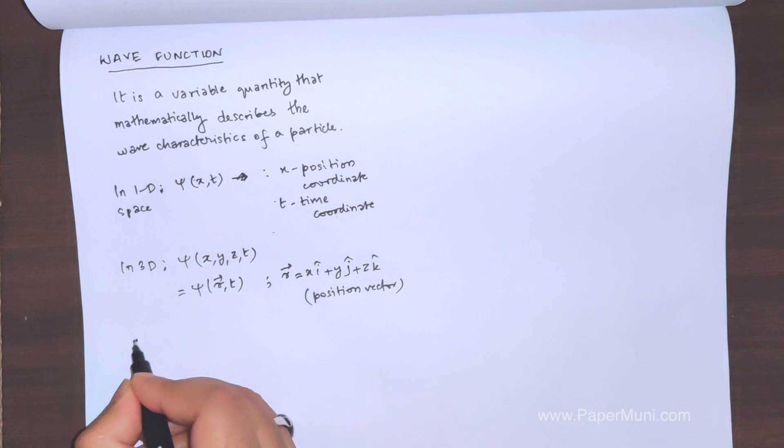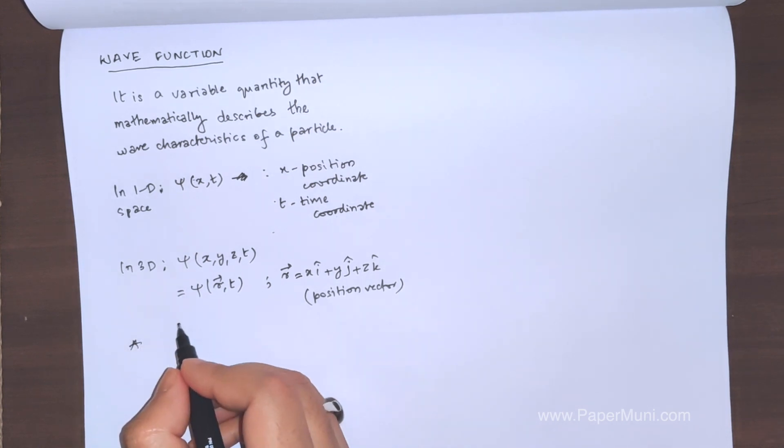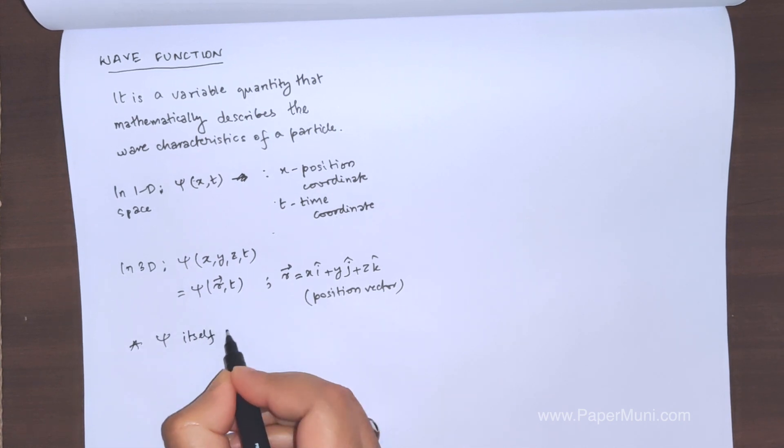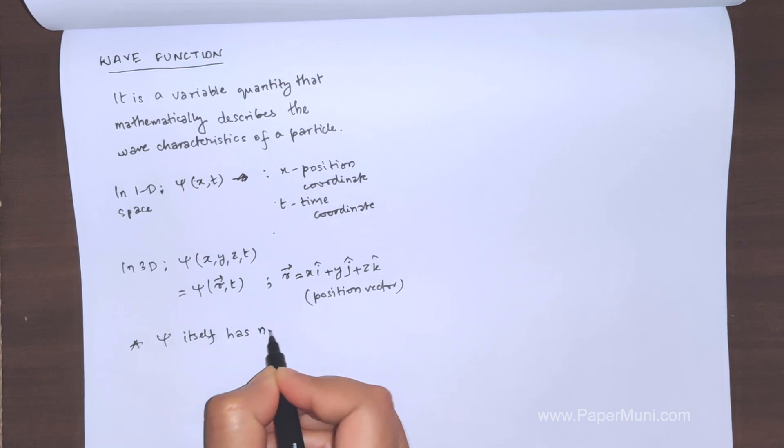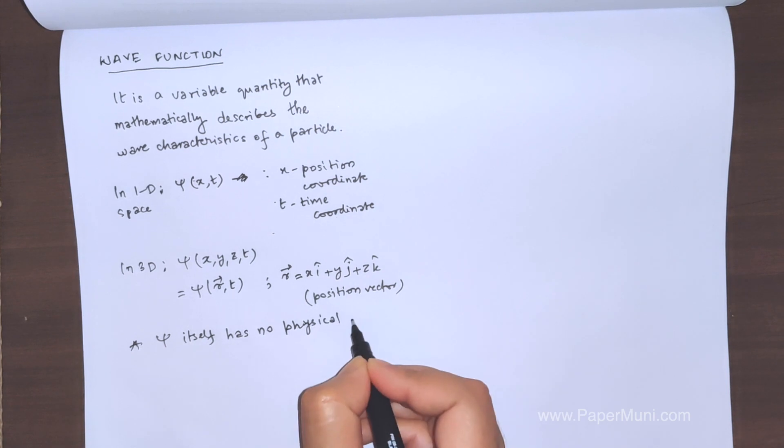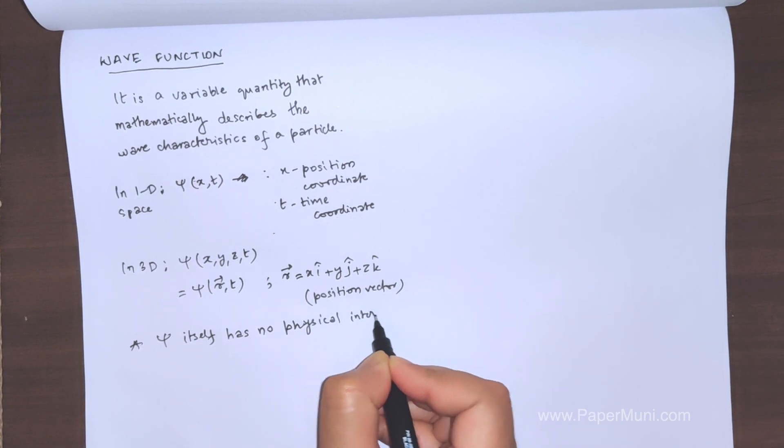So to list down the properties of wave function, the first one is that psi itself has no physical interpretation.